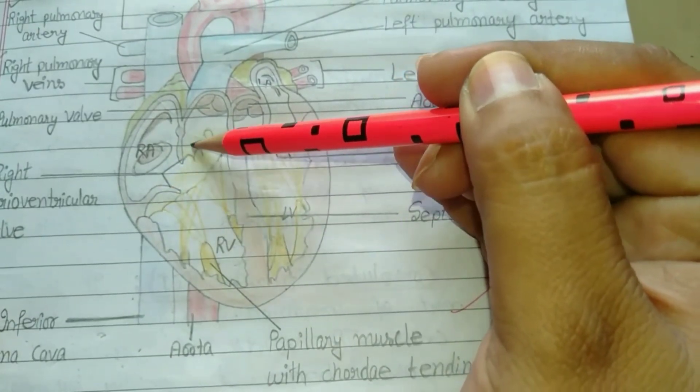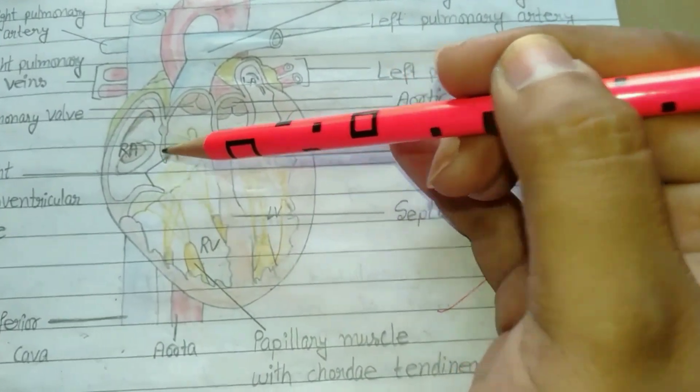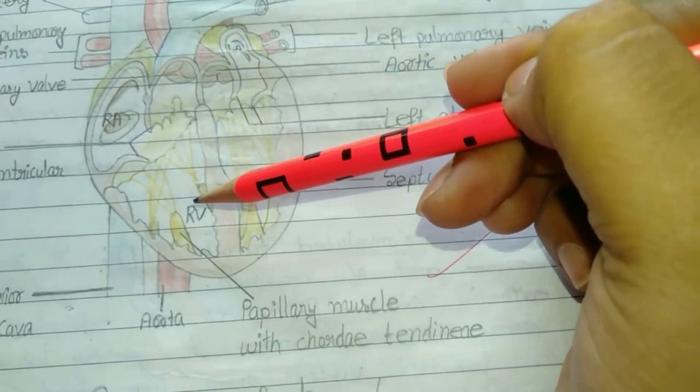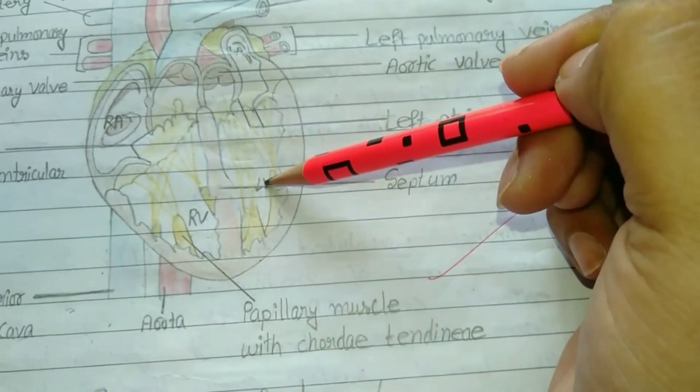After that these blood valves get closed. This is known as septum that prevents the mixing of deoxygenated blood with deoxygenated blood.